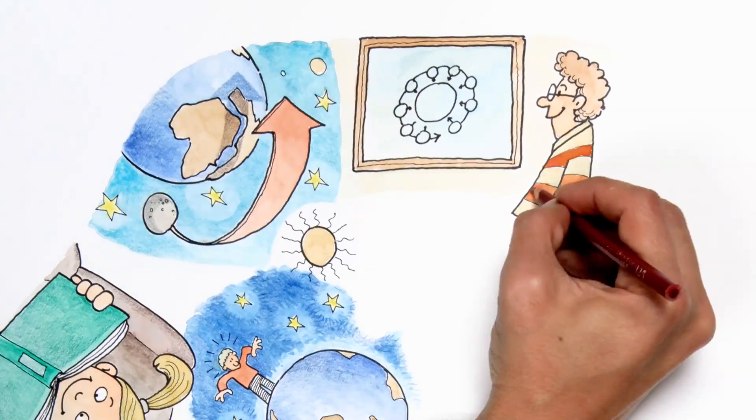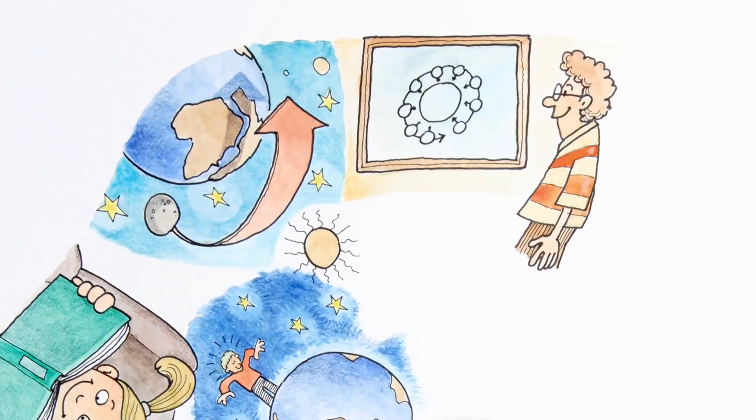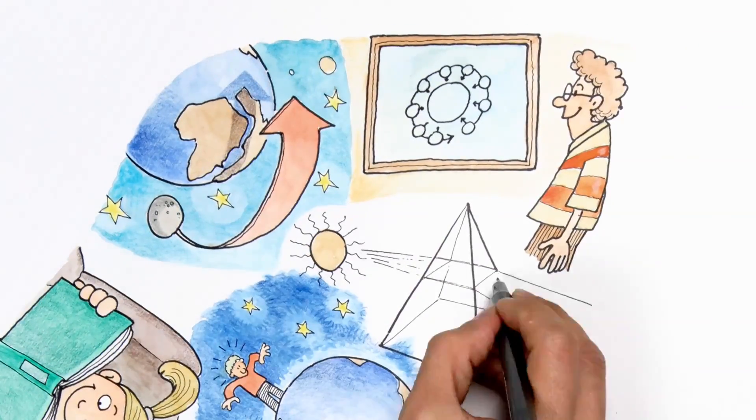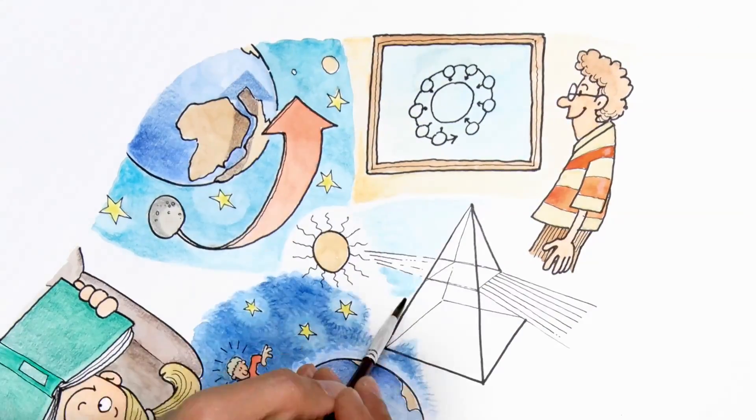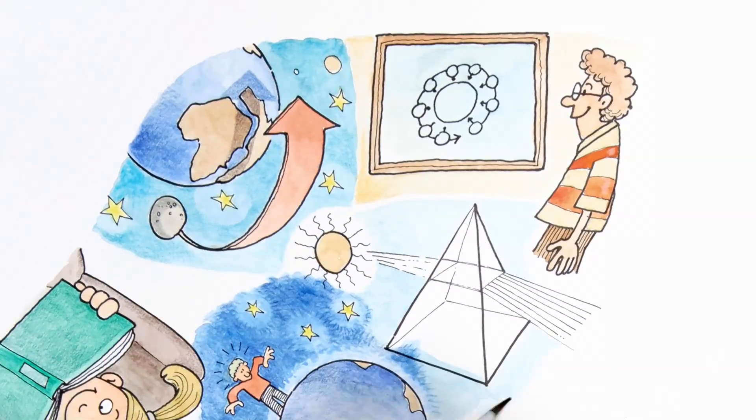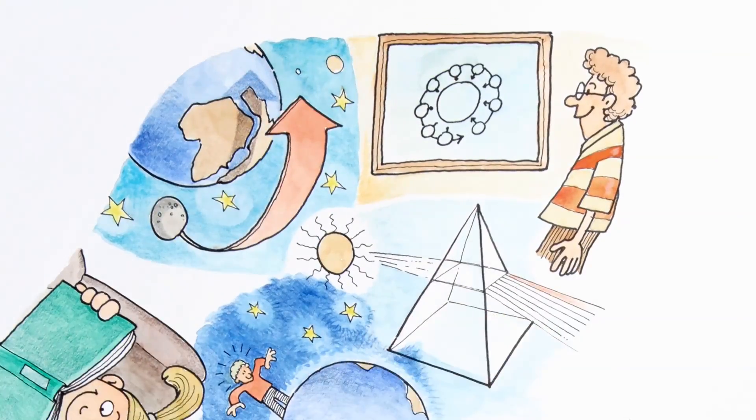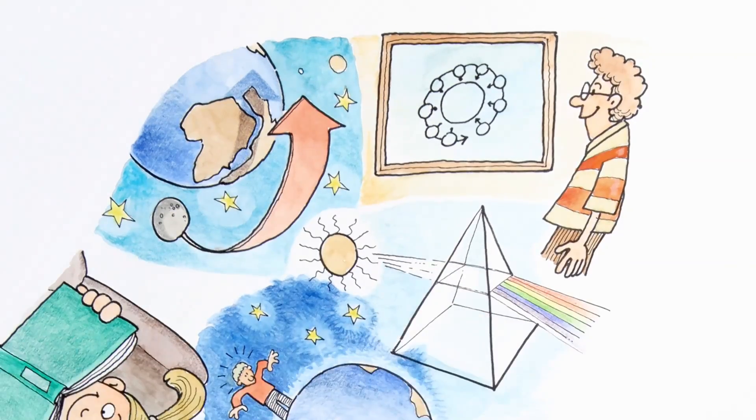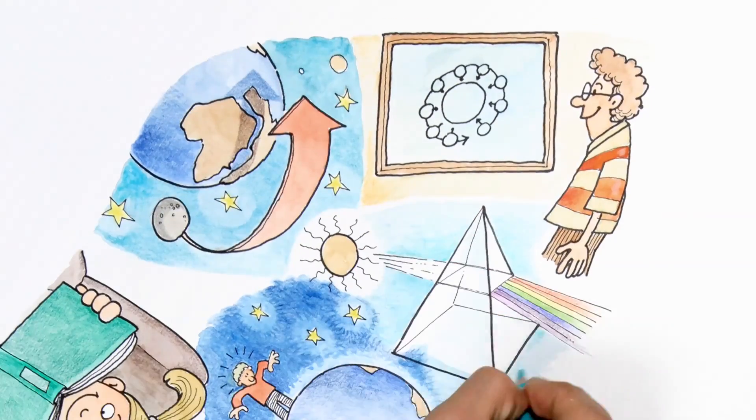Newton also made a great discovery about the composition of light. He shined a ray of sunlight through a prism and observed that as the light penetrated the glass it was white, but as it exited on the other side, it was divided into the different colors of the rainbow. So he concluded that light is actually composed of a combination of all those colors.